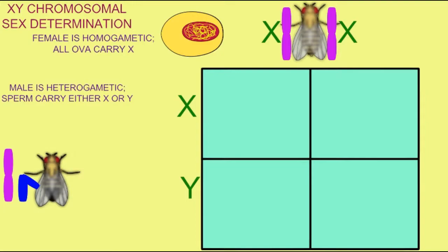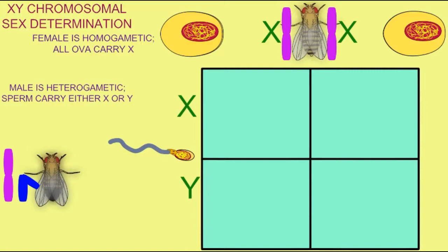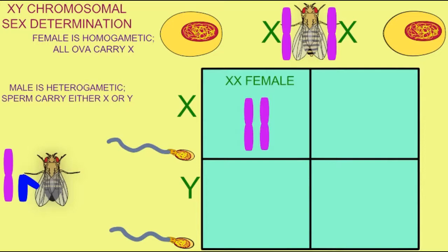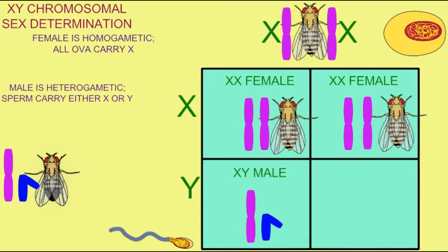Fruit flies, which are often used as a model organism, happen to be like humans in that way, in that the male flies are the heterogametic gender, and we refer to their different chromosomes as X and Y, and the females are the homogametic gender.